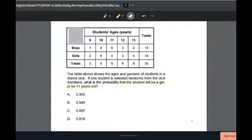The table above shows the ages and genders of students in a drama club. One student is selected randomly from the club members. What is the probability that the student will be a girl or be 11 years old?